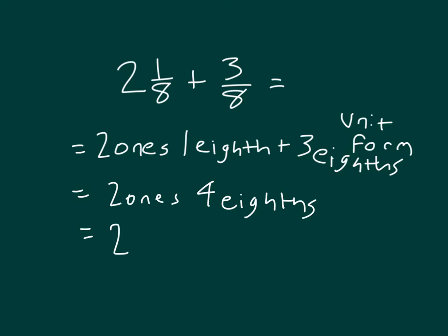How would we write that as a mixed number? Well, 2 ones, which are the wholes, and then we write the fraction, 4 eighths.